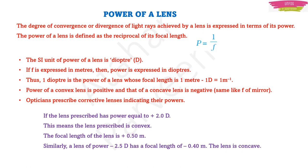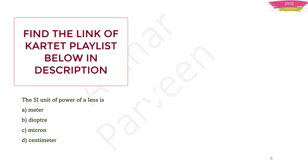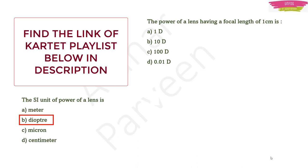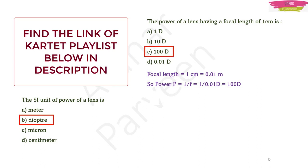Now let us solve expected MCQs. Question 1: The SI unit of power of a lens is diopter — option B. Question 2: The power of a lens with focal length 1 centimeter — since 1 diopter means focal length of 1 meter, for 1 cm you divide: 1/0.01 = 100 diopter — option C.